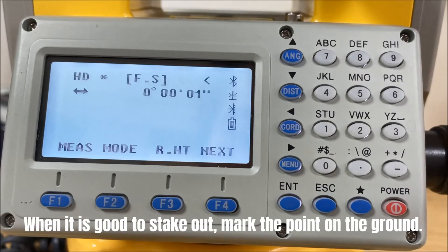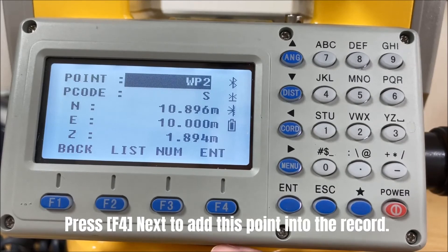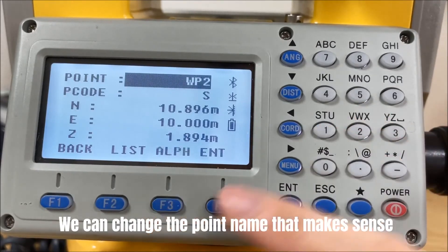When it is good to stake out, mark the point on the ground. Press F4 next to add this point into the record. We can change the point name that makes sense.